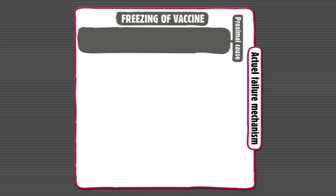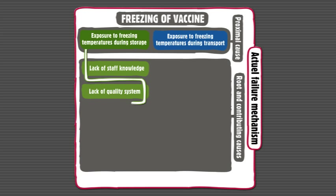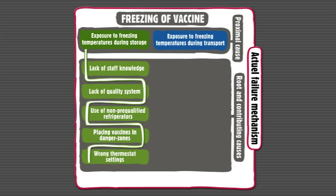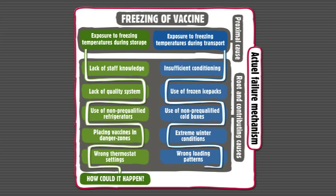The third and fourth questions involve thinking about the causes — what caused that unwanted event or that failure? Those two questions are: how could it happen? And how likely is it to happen? For example, how could the vaccine be exposed to freezing temperatures? How could a shipment of pharmaceutical products be mishandled? This is where knowledge of the system, the process, or the product is very important.